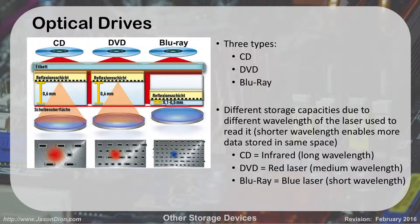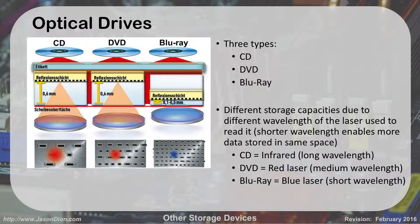Optical drives is a general category that encompasses CDs, DVDs, and Blu-ray — all three of those. They're just different formats of disk, but they're all considered optical because they use a visual way of reading the data, either laser or infrared light. Each one has different storage capacities based on the different wavelengths they use. CDs use infrared, so they have a very long wavelength, which means they can store less data — the bigger the wavelength, the less data that can fit in a certain space. DVDs use a red laser with a medium wavelength, and Blu-ray has a short wavelength using a blue laser, which is why it's called Blu-ray.